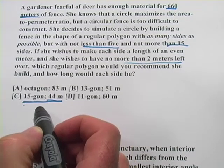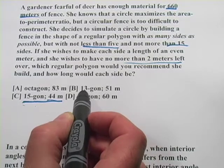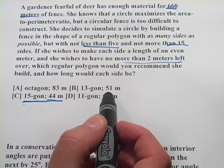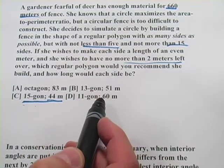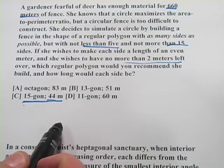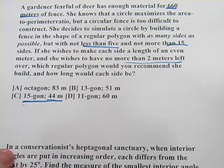I think we got lucky there choosing the first one. If we'd chosen B first, I would have multiplied 13 times 51, and I would have gotten 663. So she doesn't have enough fence for that one. The easiest way to solve a problem like that is just to test the answer choices. Let's try the next one.